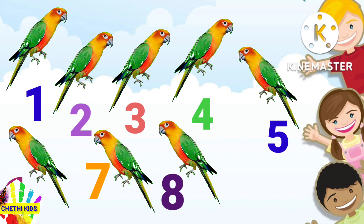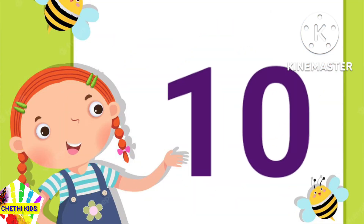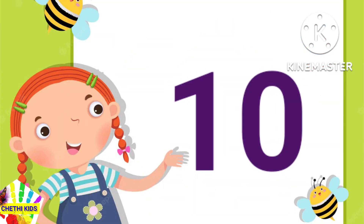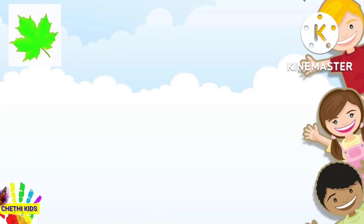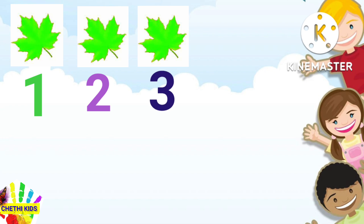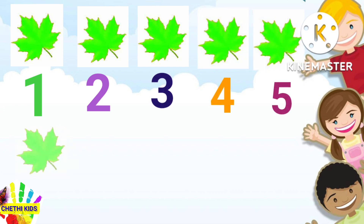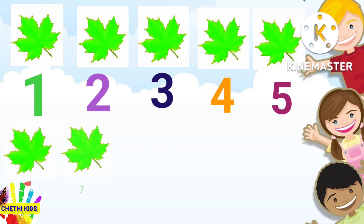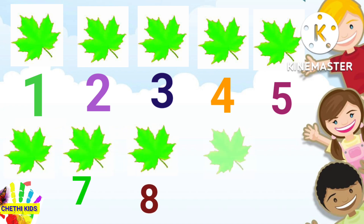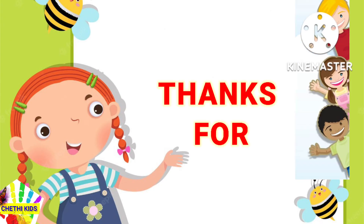Nine. Let's count the objects: one, two, three, four, five, six, seven, eight, nine — nine parrots. Ten. Let's count the objects: one, two, three, four, five, six, seven, eight, nine, ten — ten leaves. Thanks for watching!